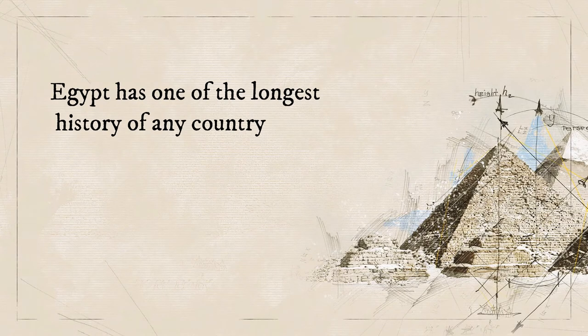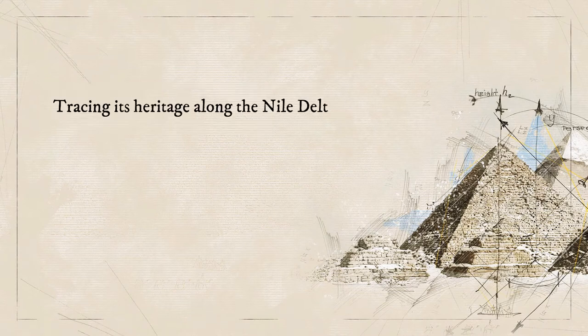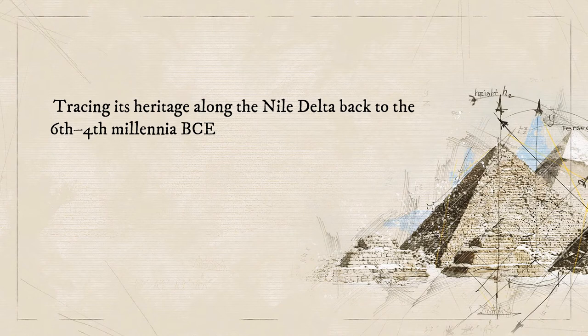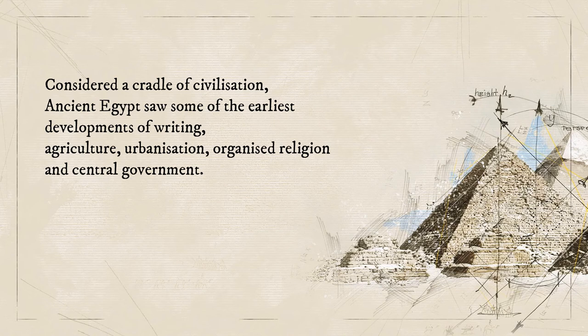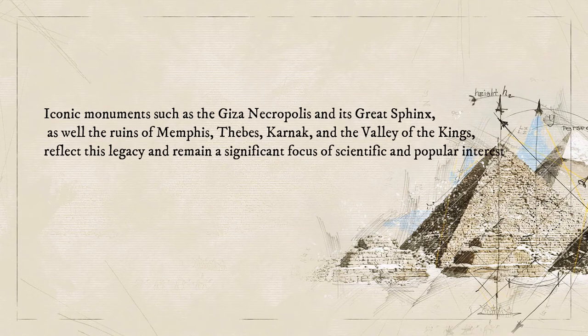Egypt has one of the longest histories of any country, tracing its heritage along the Nile Delta back to the 6th and to the 4th millennia BCE. Considered a cradle of civilization, ancient Egypt saw some of the earliest developments of writing, agriculture, urbanization, organized religion, and central government. Iconic monuments such as the Giza Necropolis and its Great Sphinx reflect this legacy and remain a significant focus of scientific and popular interest.